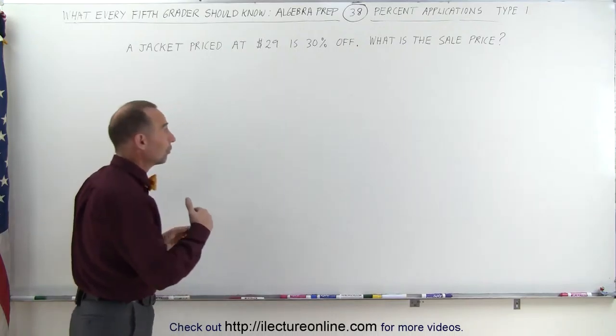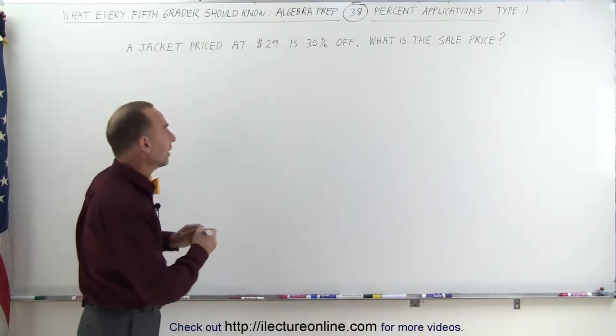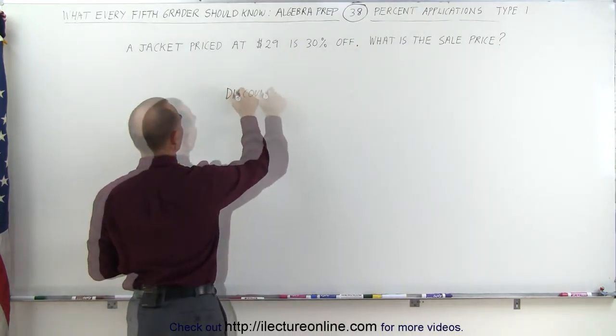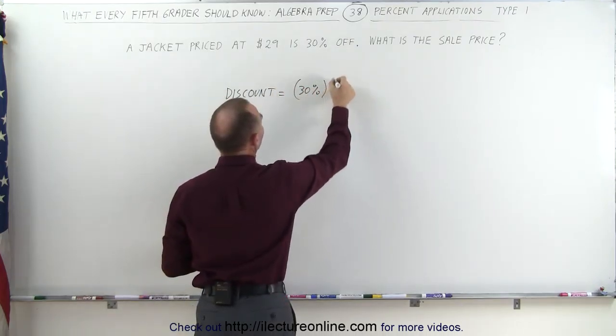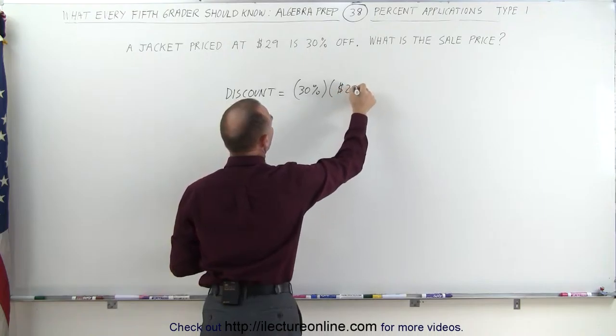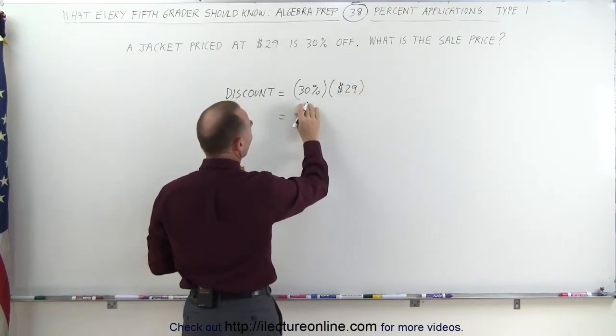What we need to do is first figure out how much the discount is. The discount is equal to 30% multiplied times the original price. And 30% is the same as 0.3.